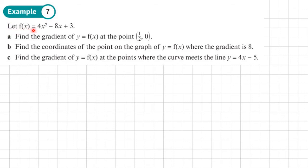Example 7. Let f of x equal 4x squared minus 8x plus 3. And in part a, what we want to do is to find the gradient of y equals f of x at the point one-half, 0. So the first thing we need to do is to find the derivative, f dash of x. And we just apply the rule that we know for quadratic. So the 4x squared will become an x term. It will become 8x. 4 times 2 is 8. The negative 8x will just become a constant, become a negative 8. And the 3 disappears.